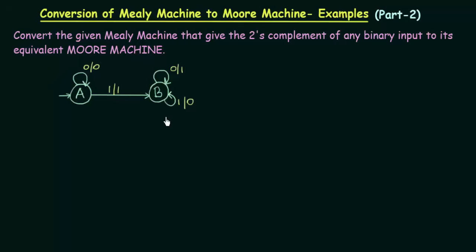We have a Mealy machine given and what this Mealy machine does is that it takes the binary input string and gives the two's complement of that binary input string as the output. We have designed this Mealy machine in one of the previous lectures. It takes the binary input from RHS to LHS and gives the two's complement. Our task is to convert this to its equivalent Moore machine.